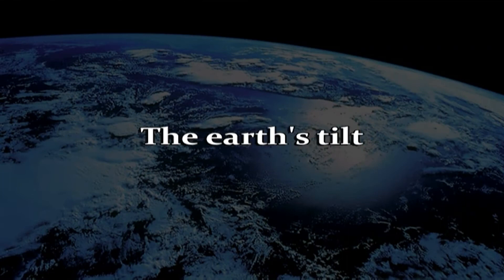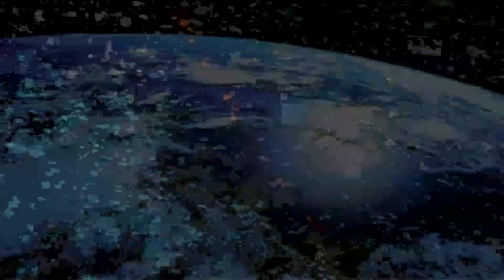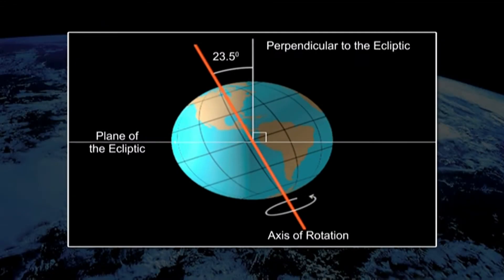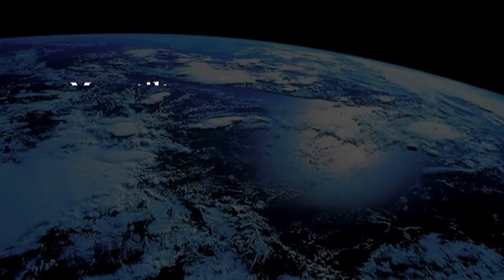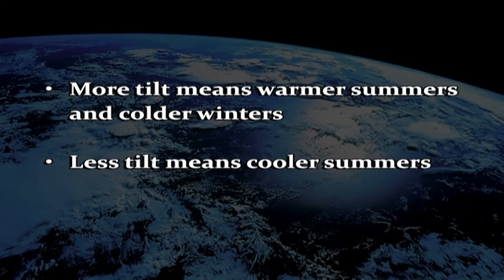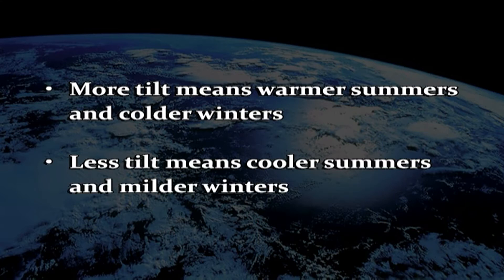Coming to one more cause: earth's tilt. The earth makes one full orbit around the sun each year. It is tilted at an angle of 23.5 degrees to the perpendicular plane of its orbital path. If there was no tilt, we would not have experienced seasons. Changes in the tilt of the earth can affect the severity of the seasons — more tilt means warmer summers and colder winters, while less tilt means cooler summers and milder winters.